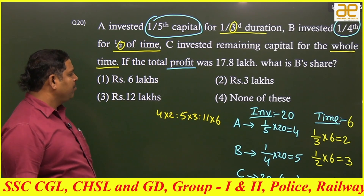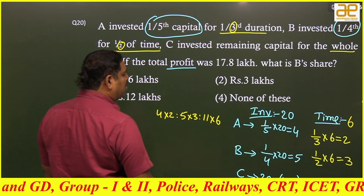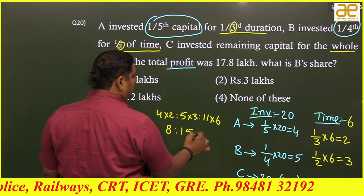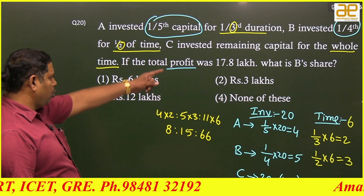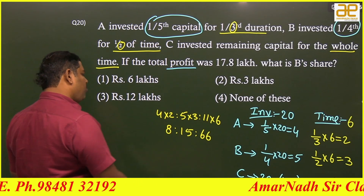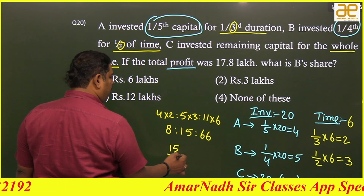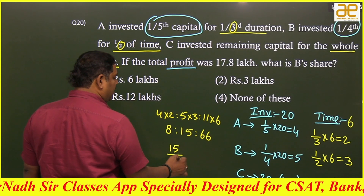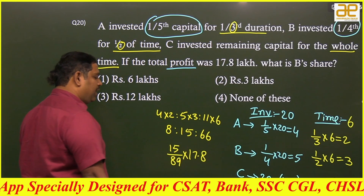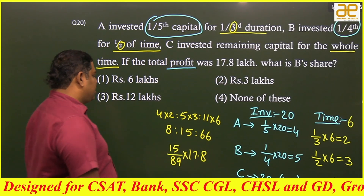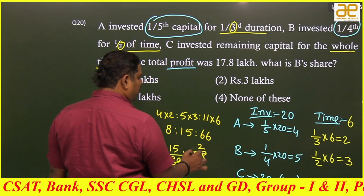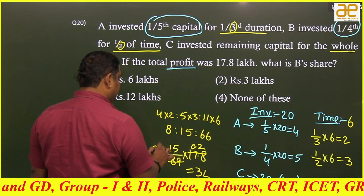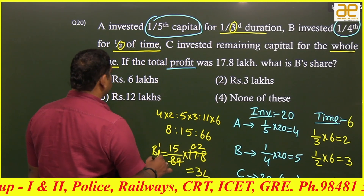The profit ratio is 8 : 15 : 66. Total profit is 17.8 lakh. B's share = 15 out of (8+15+66 = 89) into 17.8 lakhs. Cancel 89 into 17.8: 89 × 0.2 = 17.8, so 15 × 0.2 = 3. B's share is 3 lakhs. The second option is the answer.